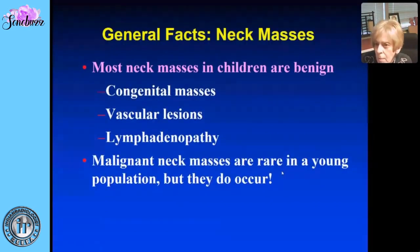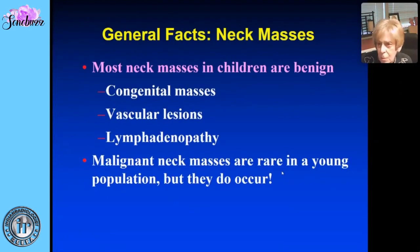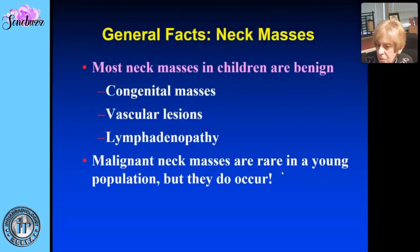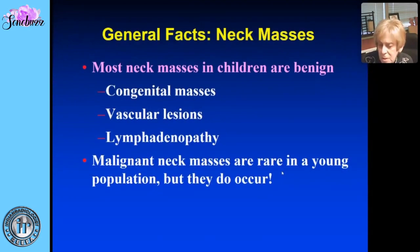General facts about neck masses in children: most of them are benign, in contrast to adults where we see a lot more cancers. We can group them into three categories: congenital masses, vascular lesions, and lymphadenopathy. Malignant neck masses do occur but they're rare, and you'll sort of know when you see one — they have a different appearance from most of these other lesions.